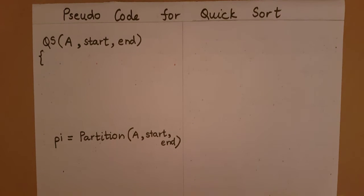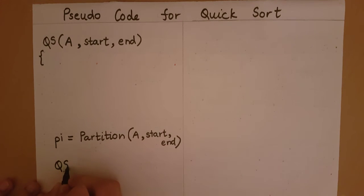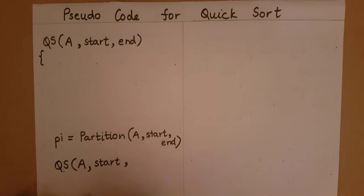Now that we have a left subarray, a right subarray, and the pivot index, we need to apply the steps done so far to the left and right subarrays. We do this by calling the quicksort algorithm itself on both subarrays, making this a recursive function. First, we call quicksort on the left subarray, which exists in the array itself. It starts from index 'start' and ends at an index one less than the pivot index.